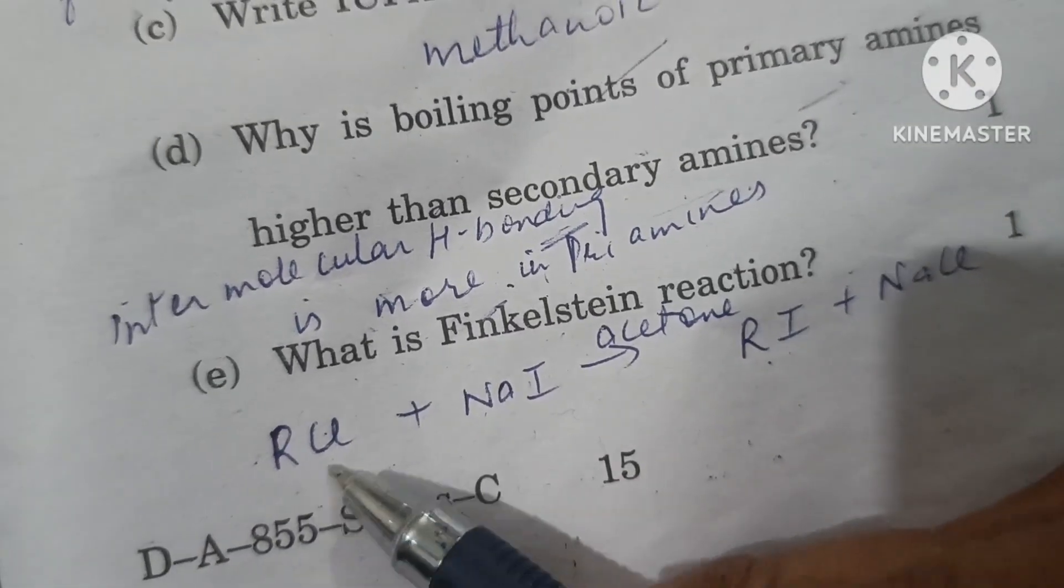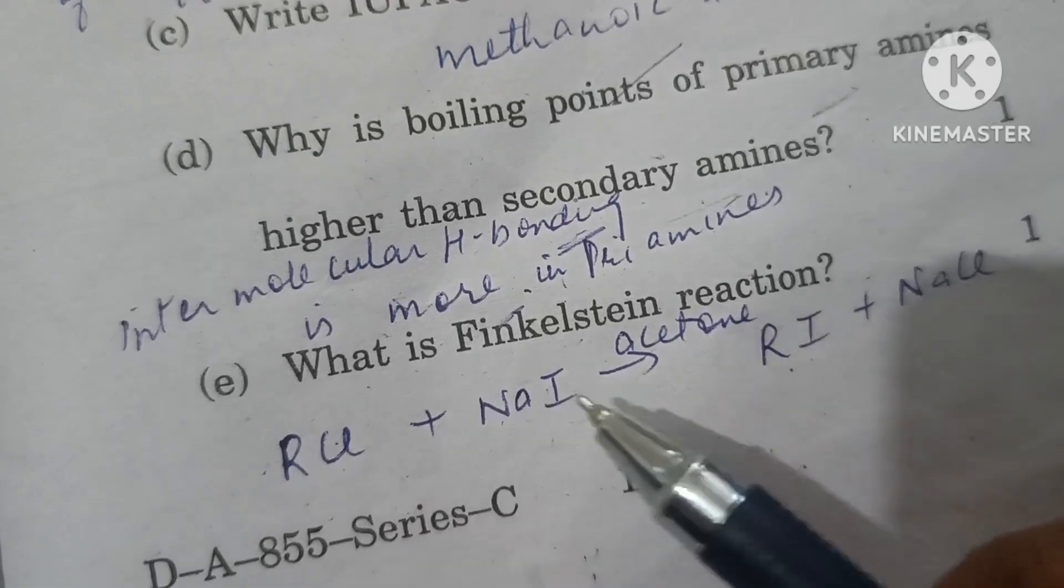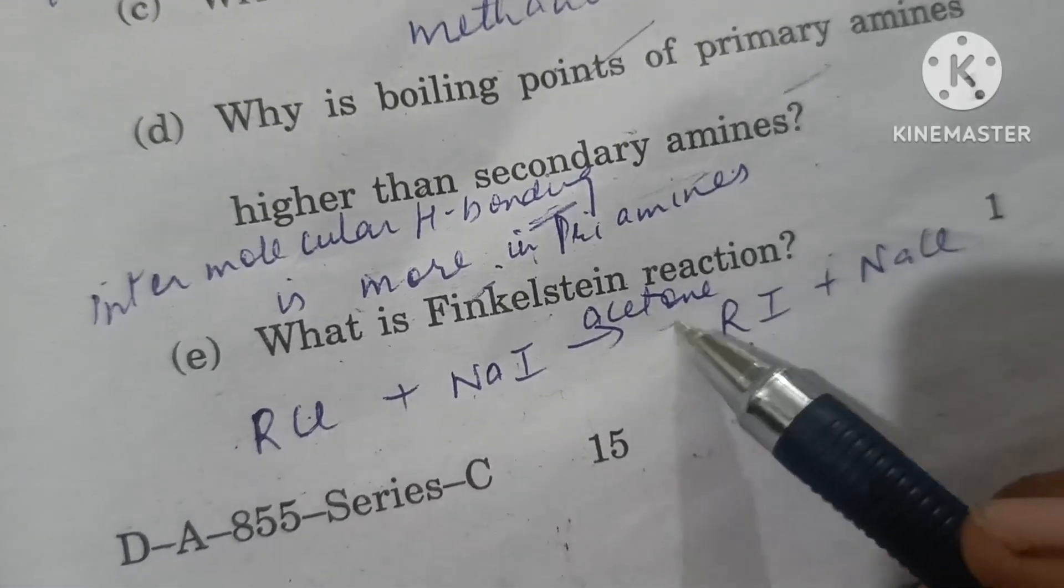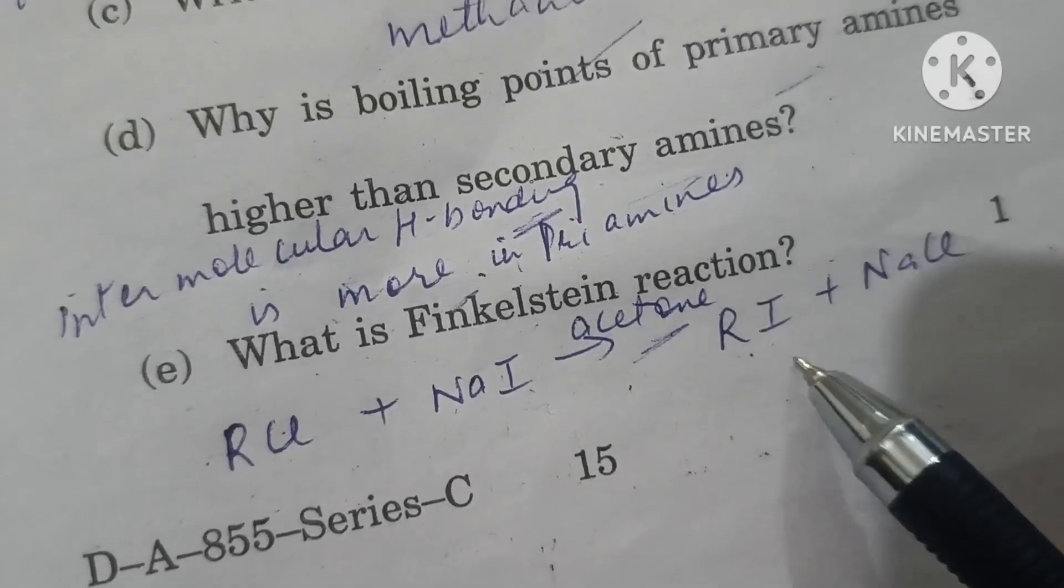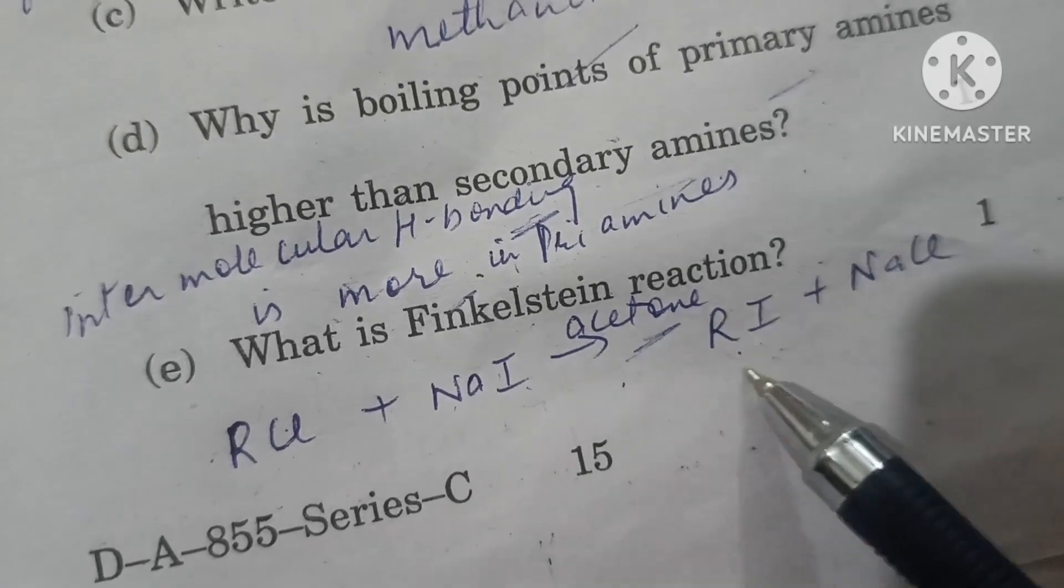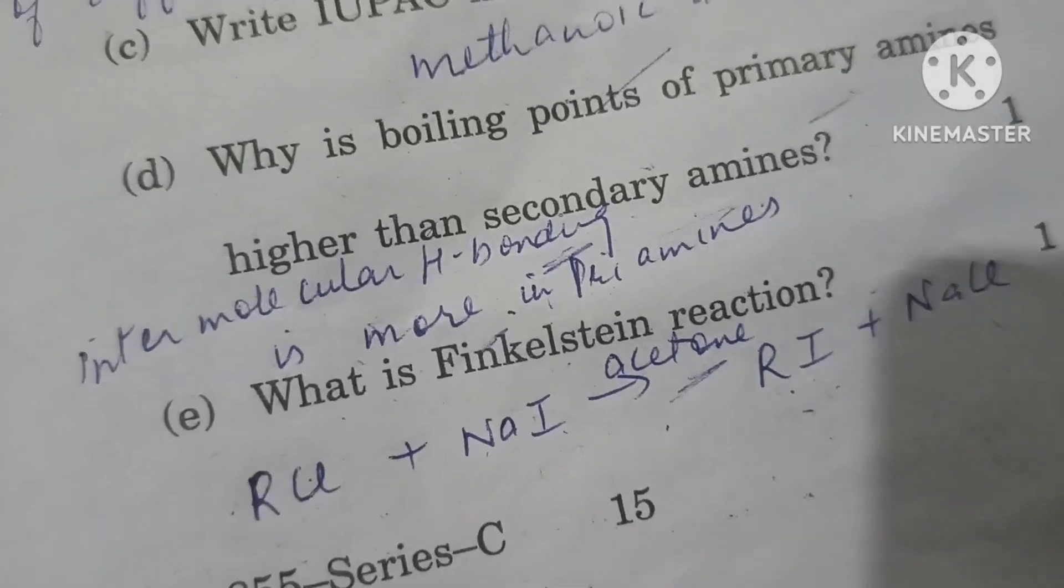In Finkelstein reaction, any chloro or bromo alkane, when we react with sodium iodide in presence of acetone, chlorine is replaced by iodine. This is a halogen exchange reaction. Iodoalkane and NaCl are formed. This is the Finkelstein reaction.